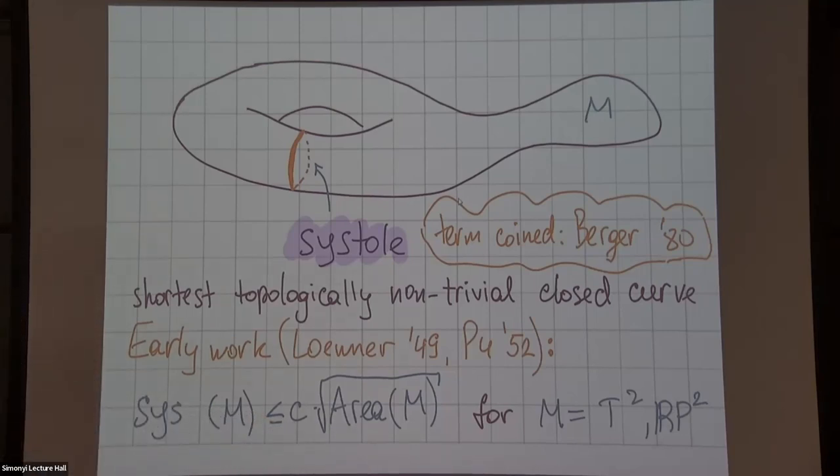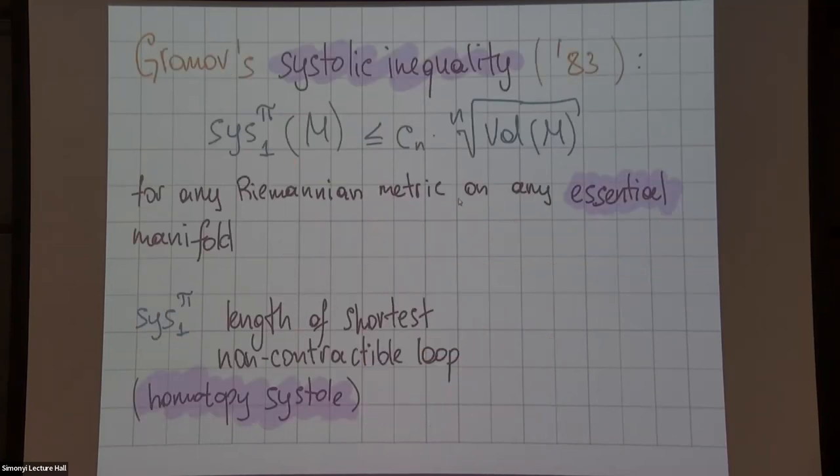The next non-trivial case is genus g surfaces or higher dimensional manifolds. Perhaps the most influential result in the area is Gromov's systolic inequality from 1983. It says that if we consider the homotopy systole, which is the length of the shortest non-contractible loop in my Riemannian n-dimensional manifold, it can be bounded from above in terms of the nth root of the volume, assuming that your manifold satisfies a topological assumption called essential.